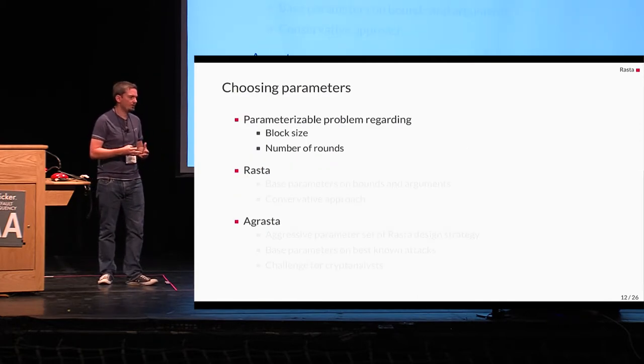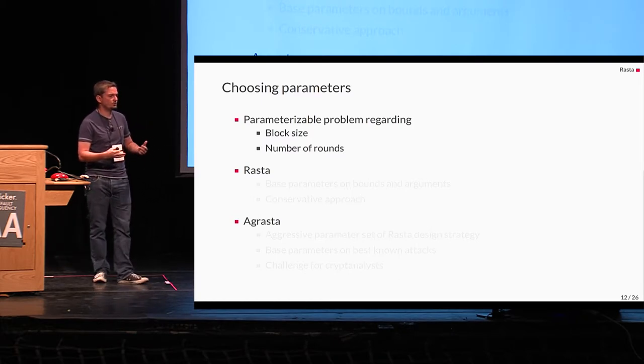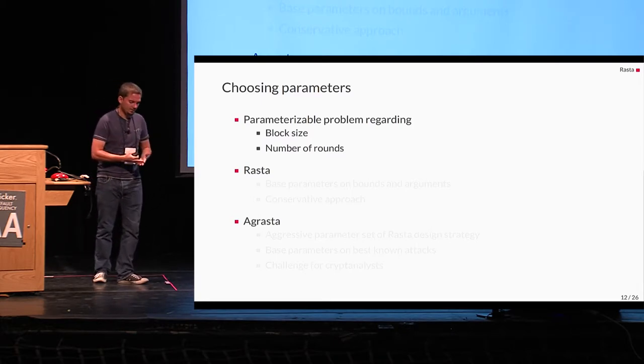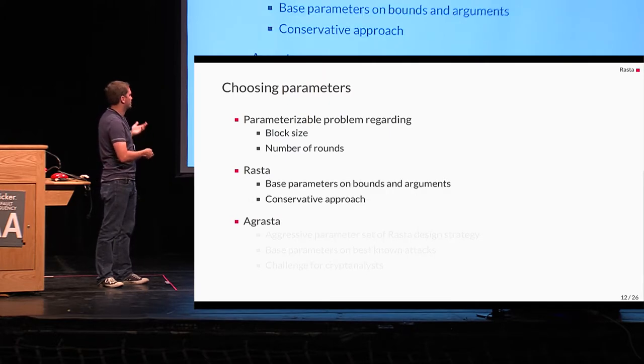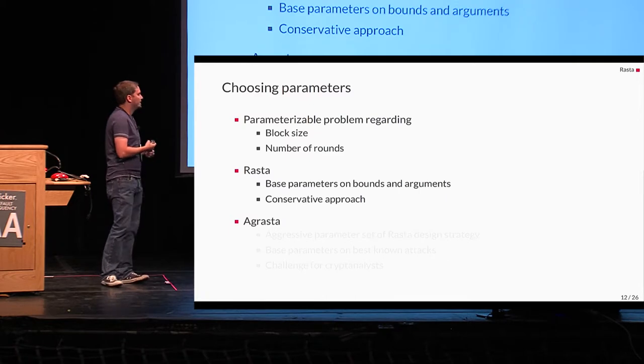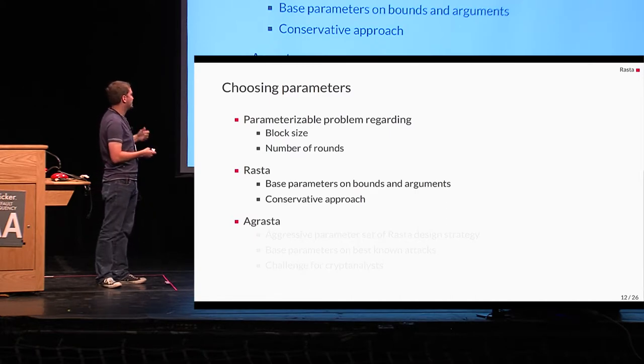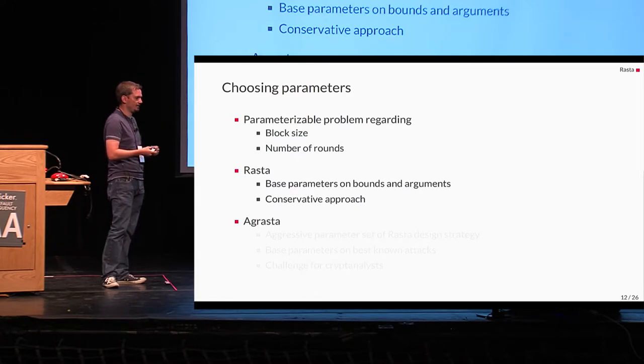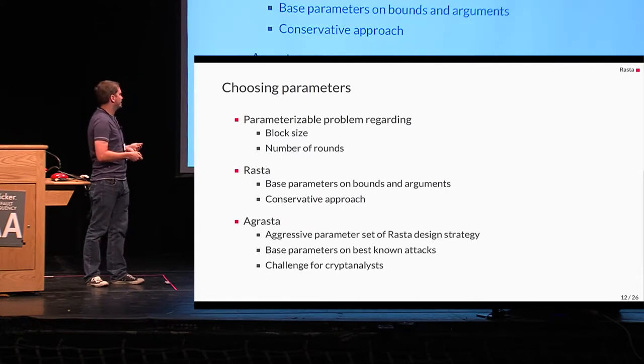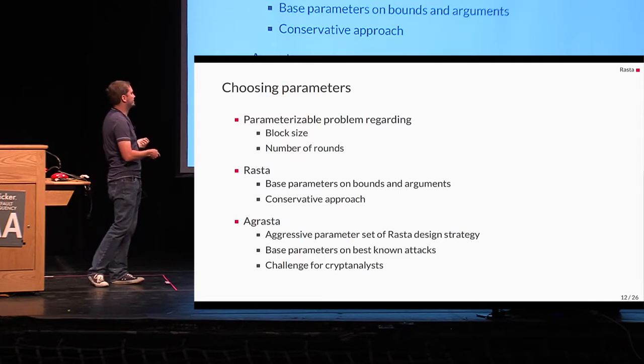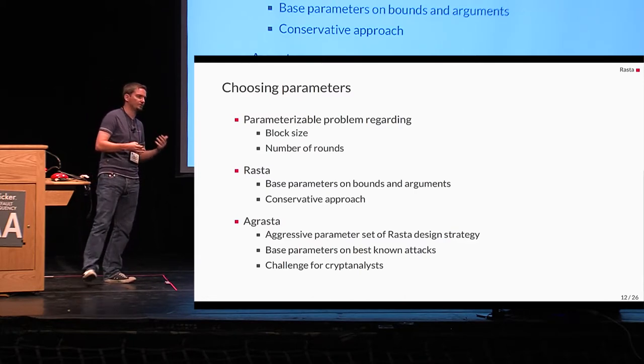So, with what we end up now is a kind of parameterizable problem regarding the block size and the number of rounds. The question we face is now how to choose the block size and the number of rounds. And actually, we have two answers to this problem. The first one is a parameter set, which we call Rasta as the design strategy, which is based on bounds and arguments. And this is our conservative approach, as we'll see later, why we call it conservative approach. And the second approach is Agrasta, which is our aggressive parameter set, which is solely based on the best known attacks. And it's kind of a challenge to cryptanalysis.